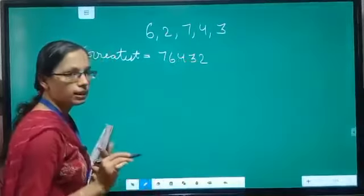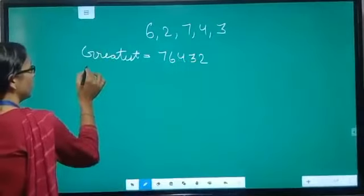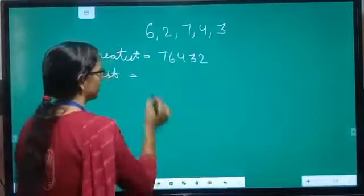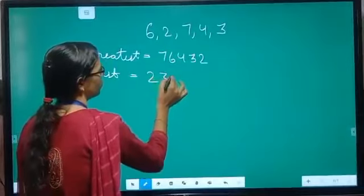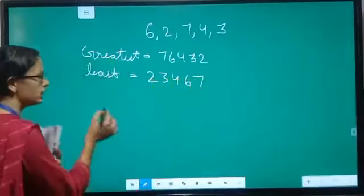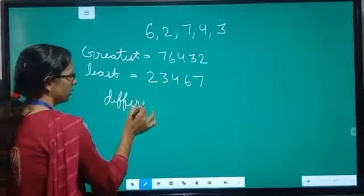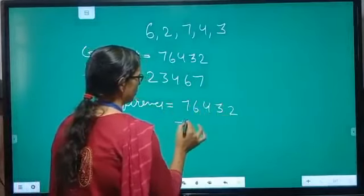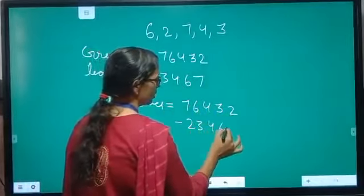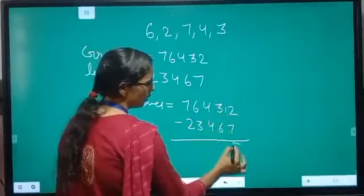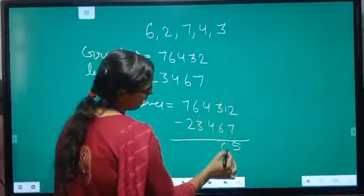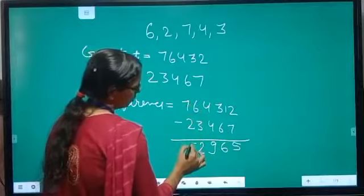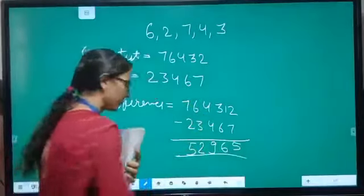The greatest number is 76,432. For the least number, arrange the same digits in ascending order: 2, 3, 4, 6, 7. So the least number is 23,467. Now to find the difference, simply do subtraction: 76,432 minus 23,467. Solving step by step: 12 minus 7 is 5, 12 minus 6 is 6, 13 minus 4 is 9, 5 minus 3 is 2, 7 minus 2 is 5. So the answer is 52,965.